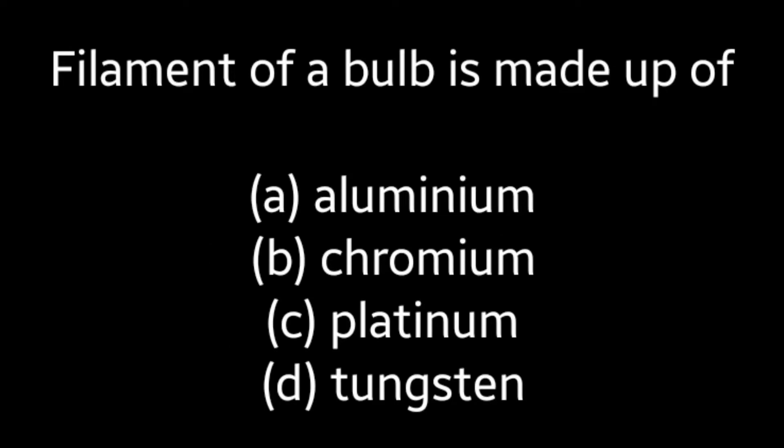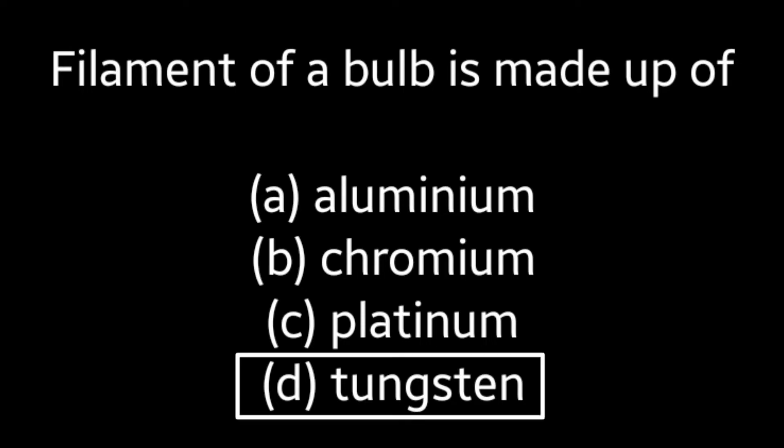Next question: Filament of a bulb is made up of (A) Aluminium, (B) Chromium, (C) Platinum, (D) Tungsten. Answer is Option D: Tungsten.